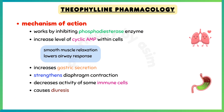Talking about the mechanism of action: theophylline works by inhibiting the phosphodiesterase enzyme, leading to an increased level of cyclic AMP within cells. This results in smooth muscle relaxation and lowers airway response to stimuli.